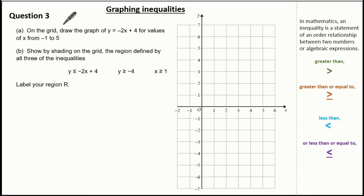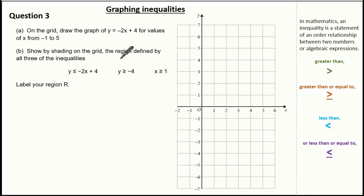Let's have a look at another question. Here the question shows a grid and we're asked to draw the graph of y equals minus 2x plus 4 for the values of x from minus 1 to 5. The second part wants us to show by shading the region defined by: y is less than or equal to minus 2x plus 4, y is greater than or equal to minus 4, and x is greater than or equal to 1. We're also asked to label our region R.